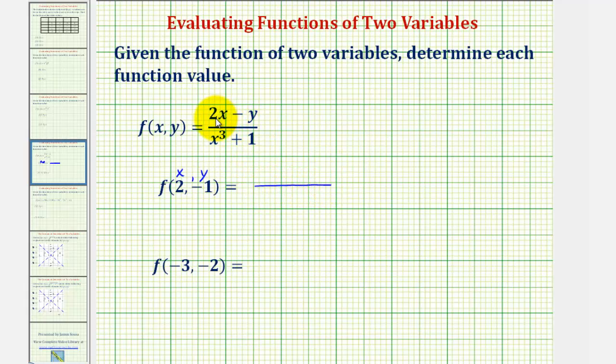So for the numerator we have two times x minus y, which would be two times two minus negative one. So looking at the numerator we have four minus negative one, or four plus one, which is five.